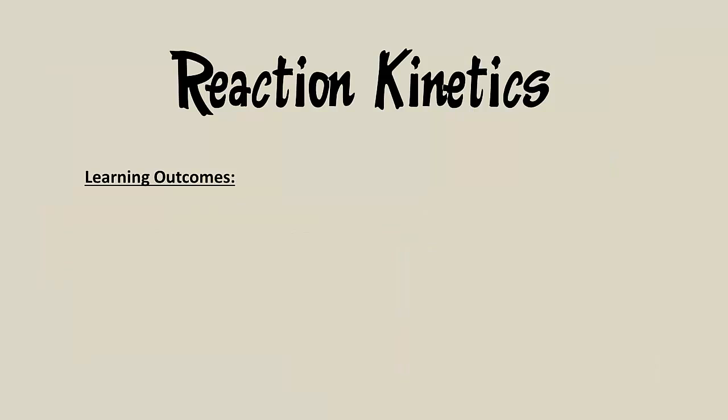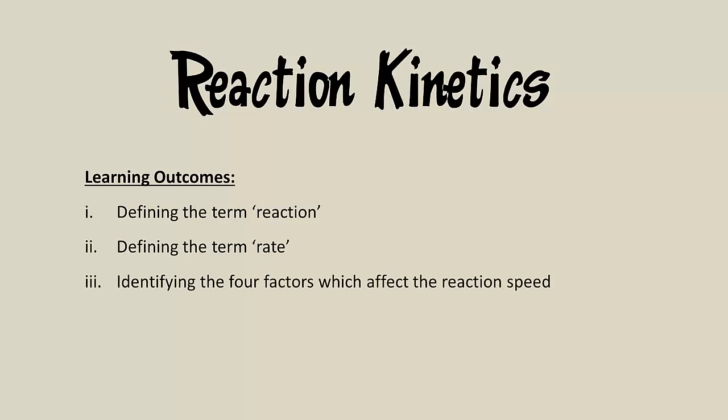In this topic we will explore the kinetics of a chemical reaction. This is the rate at which the reaction happens at. Learning outcomes are defining what a reaction is in terms of collision theory, defining what the reaction rate is, identifying the four factors which affect how fast a reaction occurs, and explaining what effect these factors have at the molecular level and how they affect the reaction speed. A lot of these ideas would have been presented in the Year 11 program, so hopefully this is more of a refresher and provides a deeper explanation of the chemical principles involved.